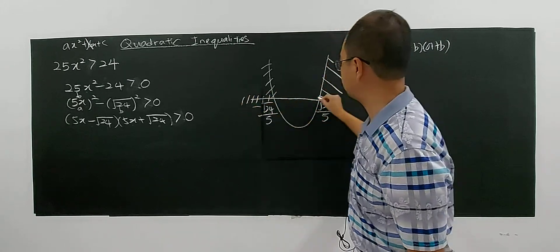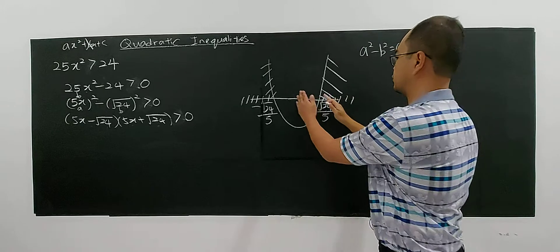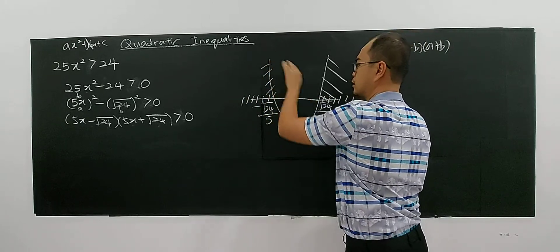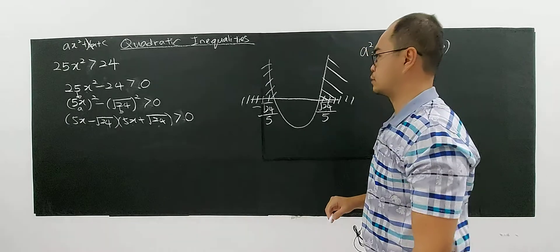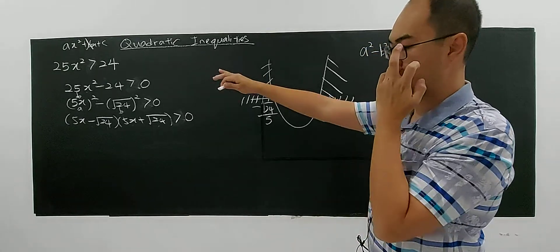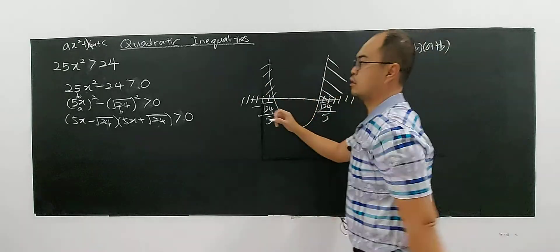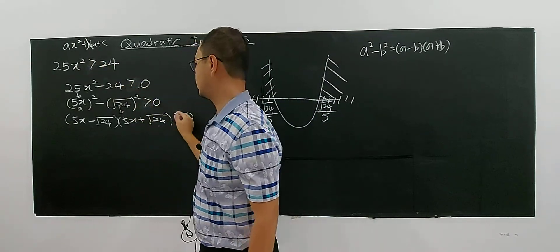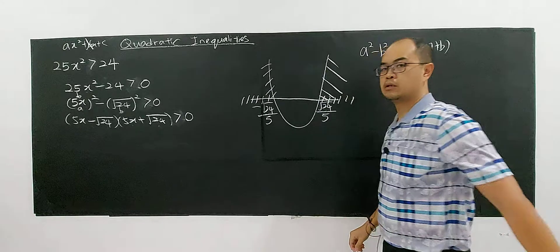Or, highlight the axis will be better for you to understand. This is the region, the value of x, when the graph is positive. When it's positive. So if I change the question, then this will be the region. If less than, this will become less than zero, then you will choose the region below here.